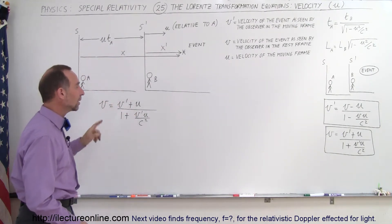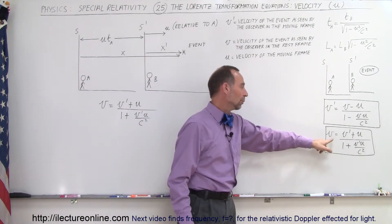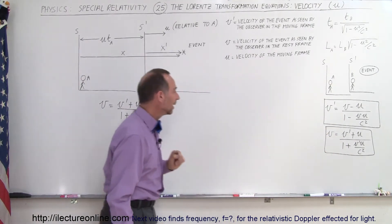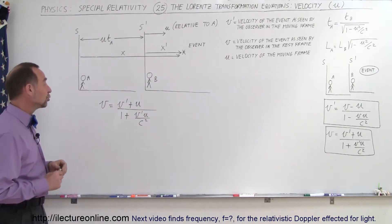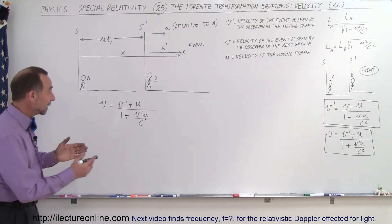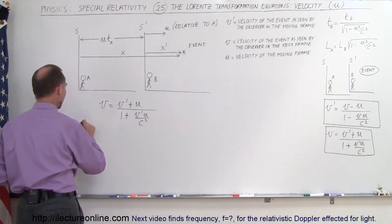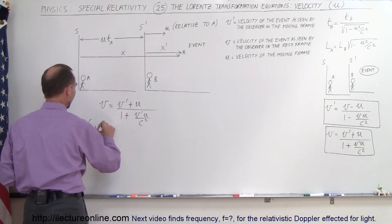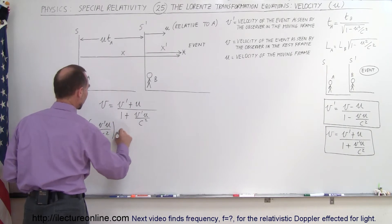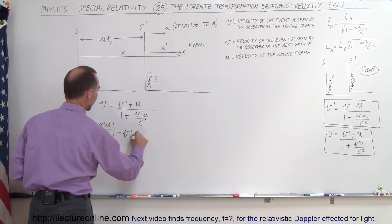We take the equation obtained in the previous video, where we have v in terms of v prime, and we're going to use that equation to now solve algebraically for u. We multiply both sides so we end up with v times the quantity (1 + v′u/c²) = v′ + u.